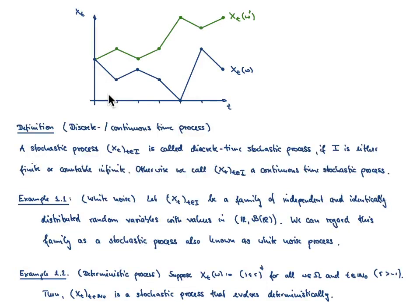In order to distinguish processes depending on the choice of index set, we have the following definition. We call a stochastic process a discrete time process if the index set I is either finite or countably infinite. Otherwise, we call it a process in continuous time.